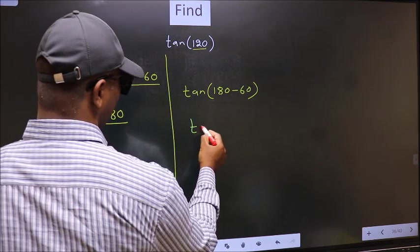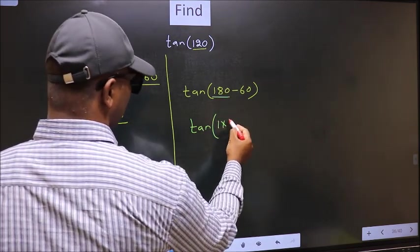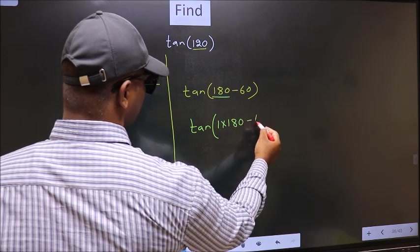Next, tan. In place of 180, now we should write 1 into 180, minus 60.